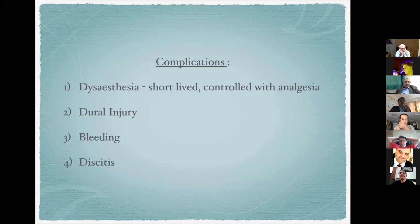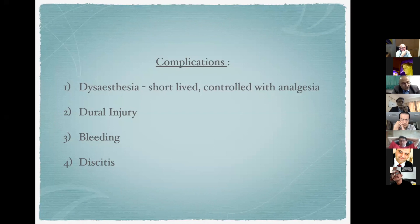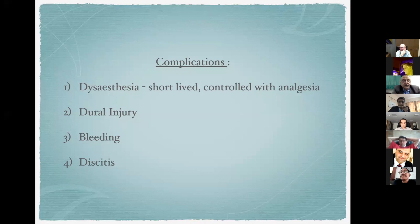Complications in this surgery include dysesthesia — requiring care near the dorsal root ganglion, usually controlled with analgesics and gabapentin or pregabalin, and short-lived. Dural injury can occur if anatomical structures are not well identified, so perfect endoscopic visualization and anatomical understanding are essential before undertaking this procedure. Bleeding can be well controlled by increasing fluid pressure. Finally, discitis: if the end plate is injured, aseptic discitis can occur.